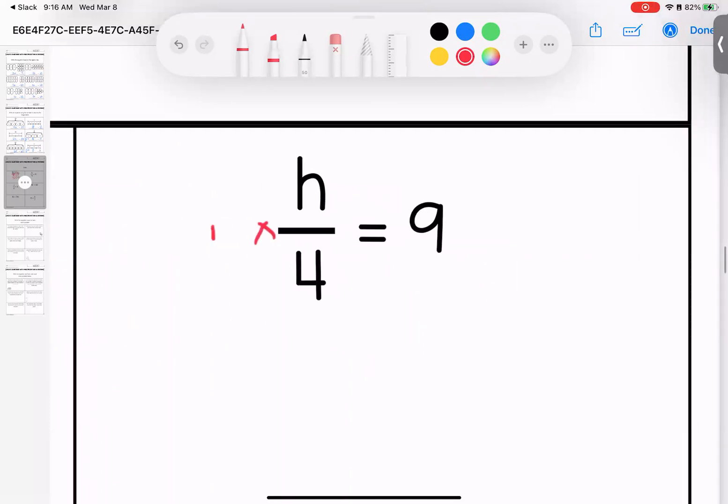Fractions mean divide. Opposite is multiply. I'm going to multiply both sides. 4 times 1/4 equals 1. It leaves the h, the 1h by itself. 9 times 4 is 36.